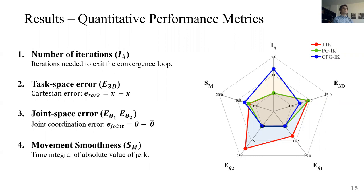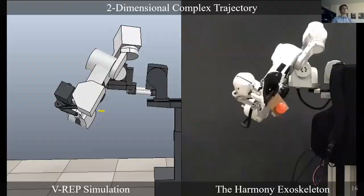Finally, the movement smoothness was computed as the time integral of the jerk of the trajectory and the CPGIK obtained slightly worse performances with respect to the other methods. So overall, we can say that the JIK had the worst performances in terms of joint space error, the CPGIK had the best performances and the PGIK, which is the green one, can be considered as a trade-off between the two other approaches.